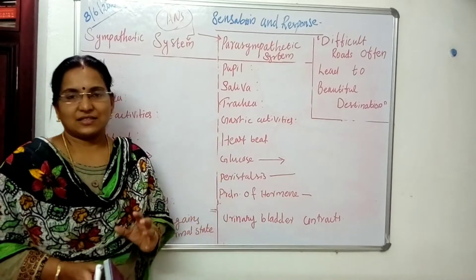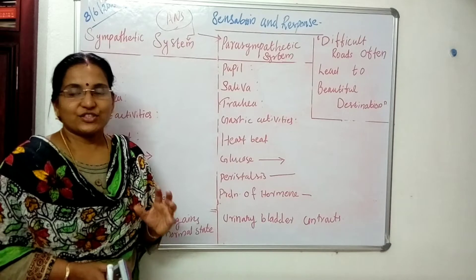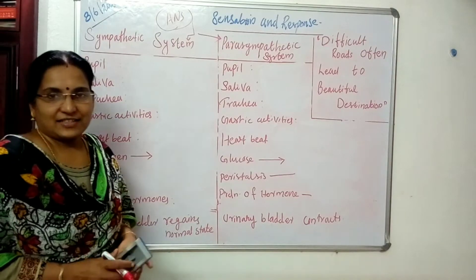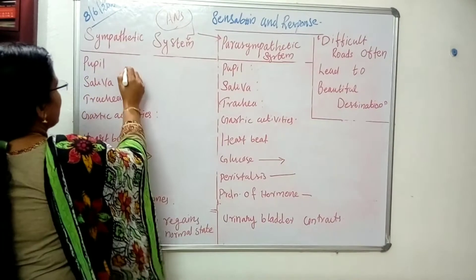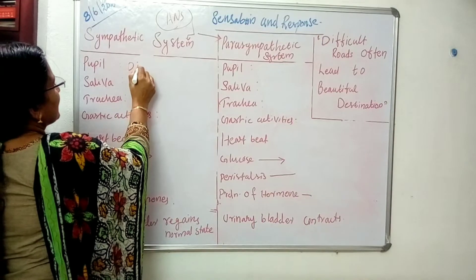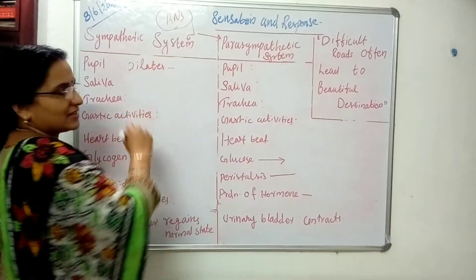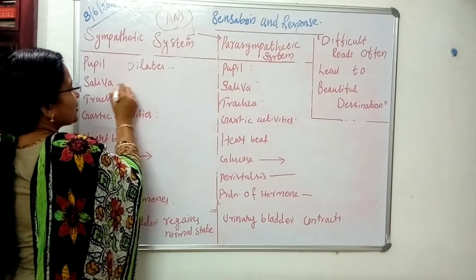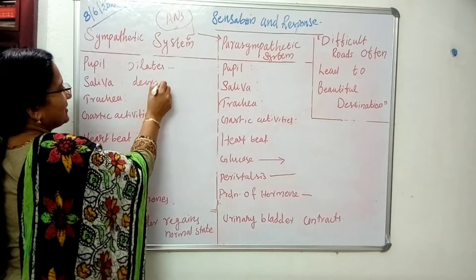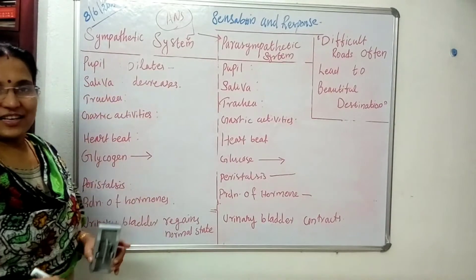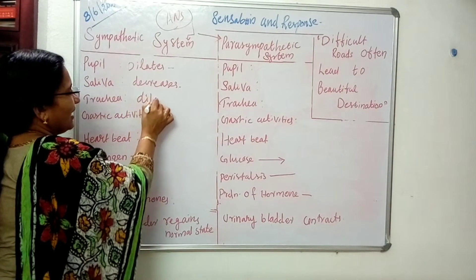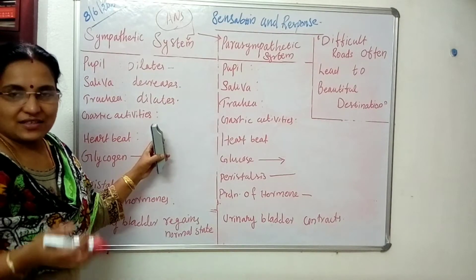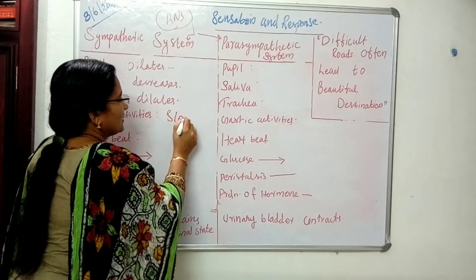Which physiological activities occur? The pupils of the eye dilate — that helps us to open our eyes widely. Then the production of saliva decreases. The trachea dilates to take in more oxygen.